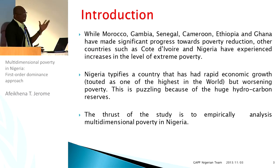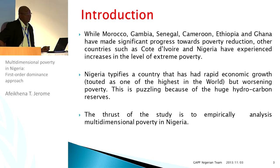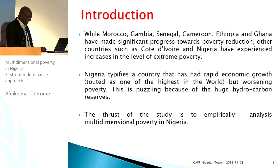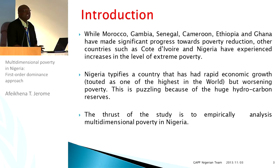Like we've seen in some of the case studies — countries like Morocco, Gambia, Senegal, Cameroon, Ethiopia, and Ghana — they seem to be making significant progress towards poverty eradication. Whereas the so-called oil elephant, like we heard at the last presentation, and Nigeria, are moving in the opposite direction. They've not made much progress.